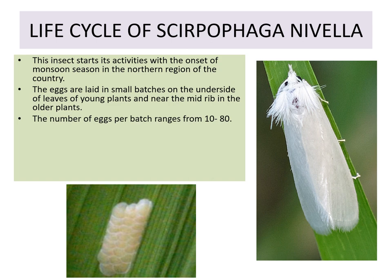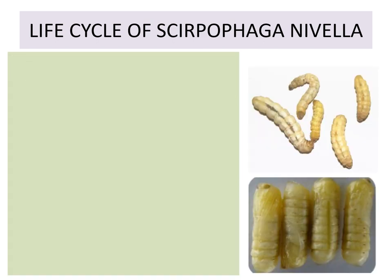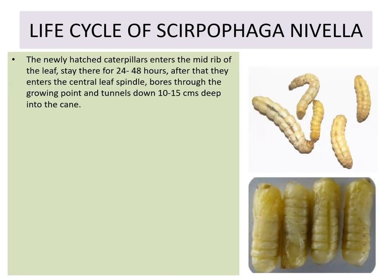The number of eggs per batch ranges from 10 to 80. The mass or cluster of eggs soon gets covered by a hairy orange sheath. The eggs hatch in about a week in warm places, whereas in colder places it takes 10 to 12 days depending upon the temperature. The newly hatched caterpillars enter the midrib of the leaf and stay there for 24 to 48 hours.